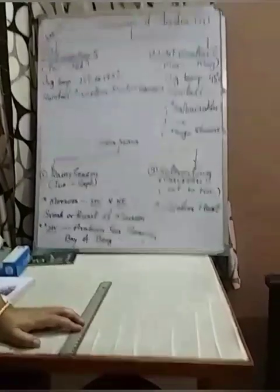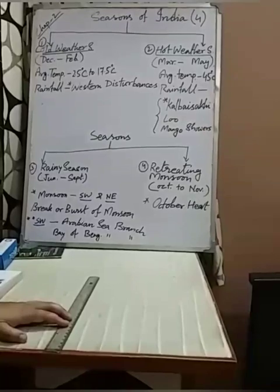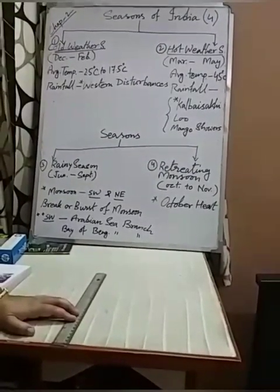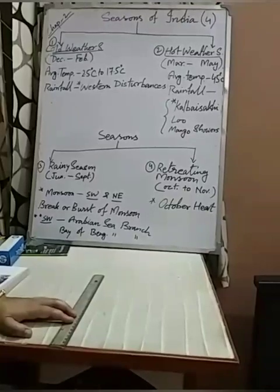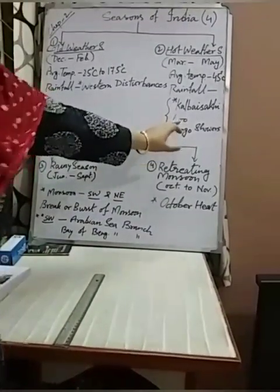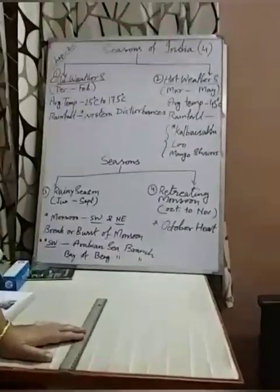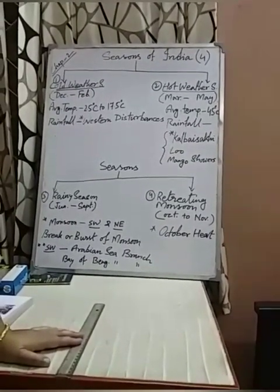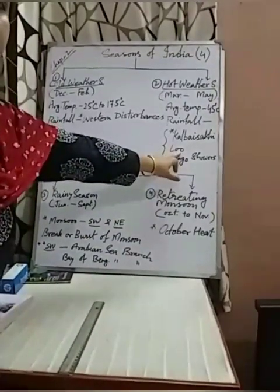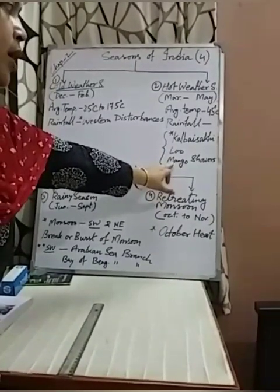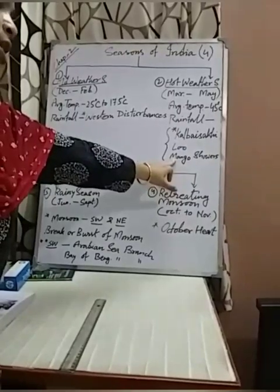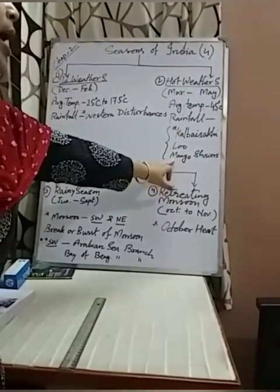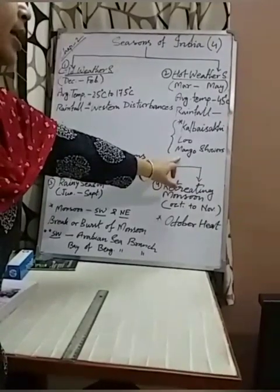Kalboishakhi is a kind of natural calamity which takes place in Jharkhand, Uttar Pradesh, and West Bengal. It is very useful for jute cultivation and rice cultivation in West Bengal, and very important for tea cultivation in Assam. The second one is Loo — a kind of local wind. When this wind blows through the northern part of India, temperature suddenly rises, but this wind does not bring any rain. Mango showers is a wind common in Kerala and South India that brings rain during this period, and is very beneficial for mango and coffee cultivation in South India.